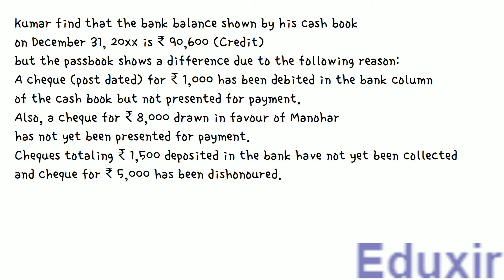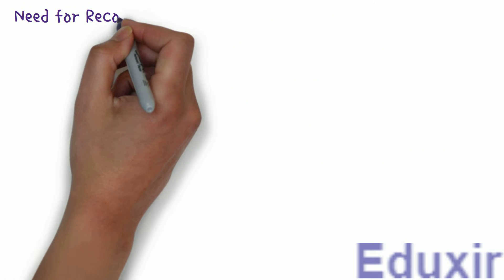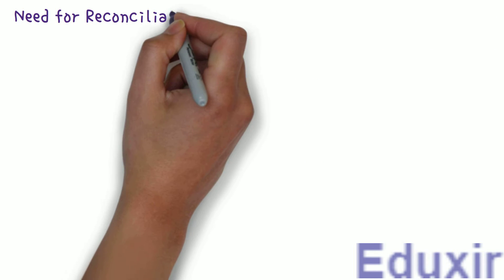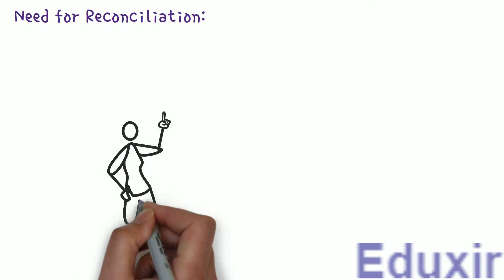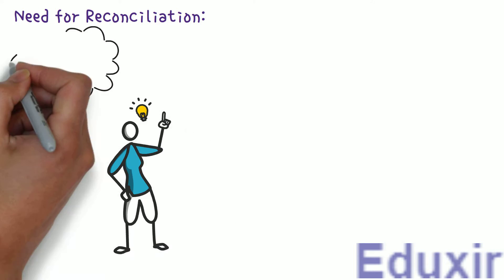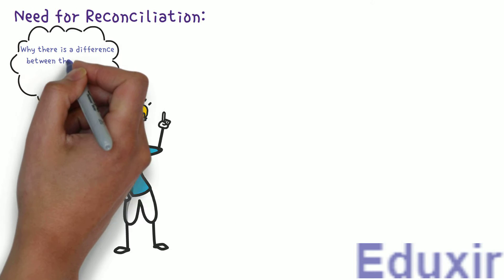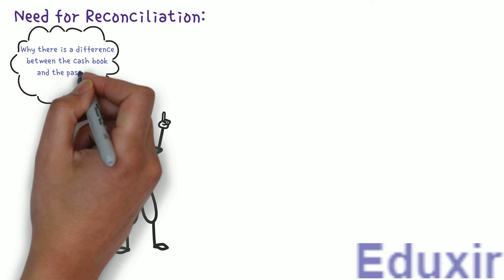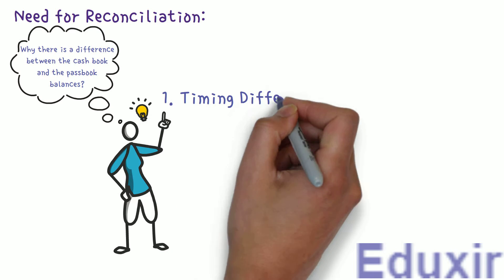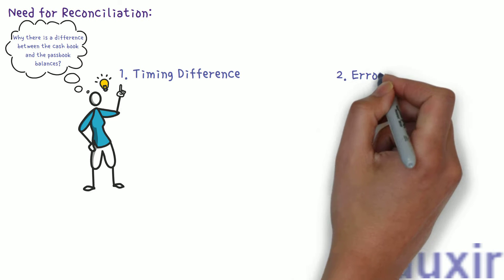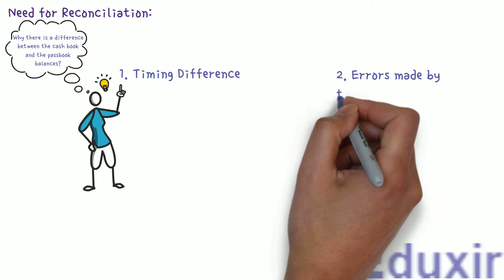Before we proceed with the analysis of these particulars, let us first recap about why there is a need for reconciliation. By preparing the bank reconciliation statement, we get an idea about why there is a difference between the cashbook and the passbook balances. This difference could be due to timing differences in recording transactions, or errors made by the business or the bank.